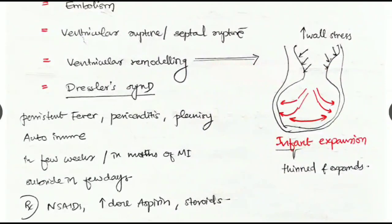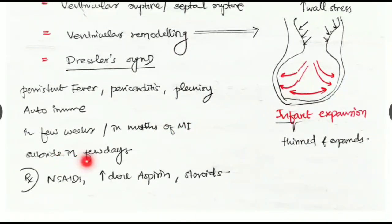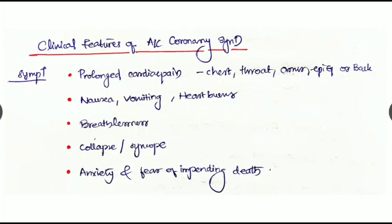There can also occur Dressler syndrome. The triad of Dressler syndrome is persistent fever, pericarditis, and pleurisy. It is an autoimmune condition. It develops within a few weeks or months of development of myocardial infarction and subsides within a few days. The treatment we are giving is NSAIDs, high dose of aspirin, and steroids.